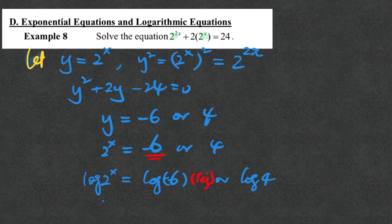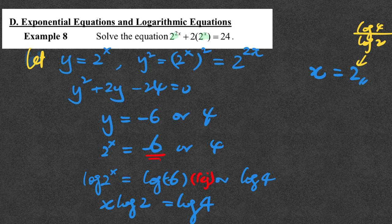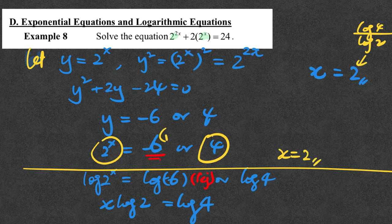Meanwhile, by the rule of logarithms, x can be moved in front of log 2, giving x log 2 equals log 4. By division, x equals log 4 over log 2, which equals 2. Actually, if you are careful, you can observe directly that 2 squared is 4, so the shortest way is to stop at 2 to the power x equals 4 and write x equals 2 directly, rejecting minus 6.